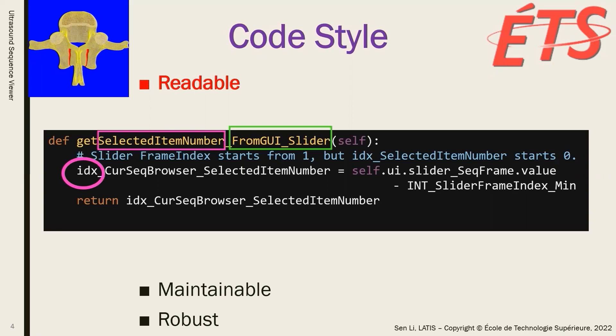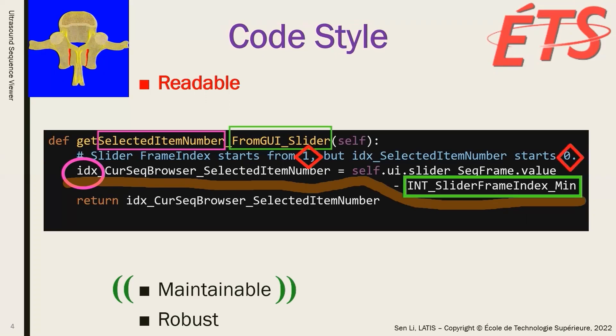From the comment, we know that this function is to make the code maintainable by using a function to avoid the magic number 1, which is replaced by the string macro int slider frame index minimum. The name of the string macro begins with the type int, and it contains two more phrases, meaning the minimum of the slider frame index.